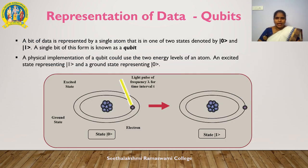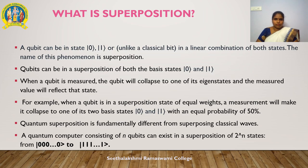Qubits are represented by ket-vector form. A bit of data is represented by a single atom in one of two states denoted by the |0⟩ vector and the |1⟩ vector, and a single bit of this form is known as a qubit. The physical implementation of a qubit could use the two energy levels of an atom: an excited state representing |1⟩ and a ground state representing |0⟩, as clearly shown in the diagram. Think of a qubit as an electron in a magnetic field — the electron spin may be in alignment with the field (spin-up state) or opposite to the field (spin-down state). Changing the electron spin from one state to another is achieved using a pulse of energy such as from a laser.